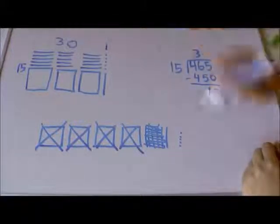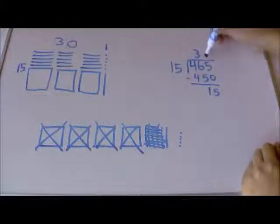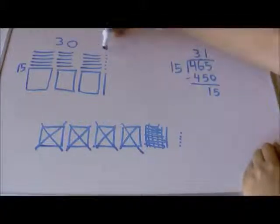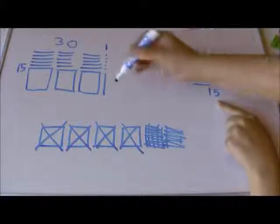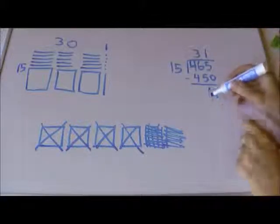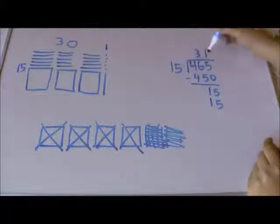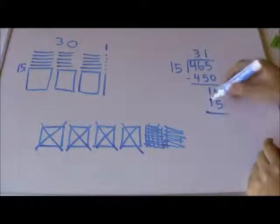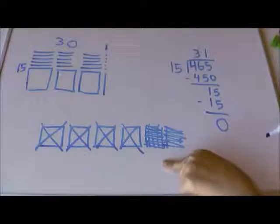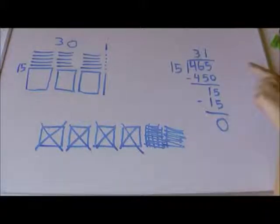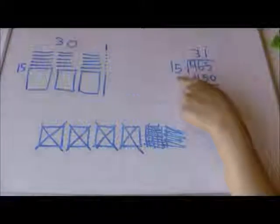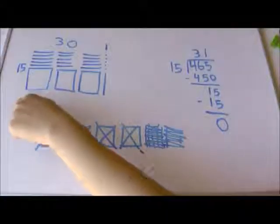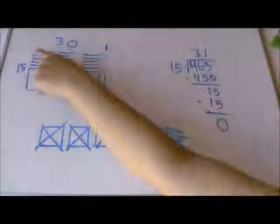Just one on the other side, so I put a 1 here because I've gone across one more. How much did I take away from my 15? I took away 15 times 1 — that's 15 — and now I have nothing left, no remainder. I have made a rectangle out of 465: one side is 15, and the other side I found out is 31.